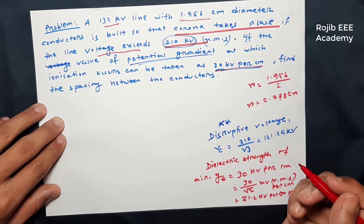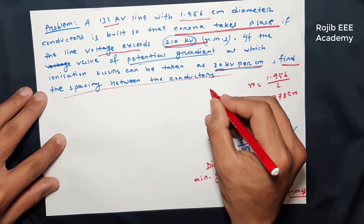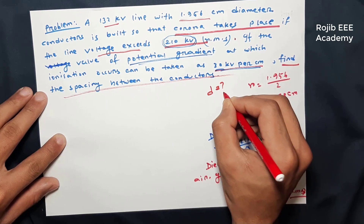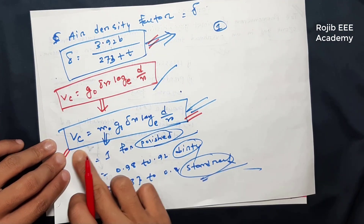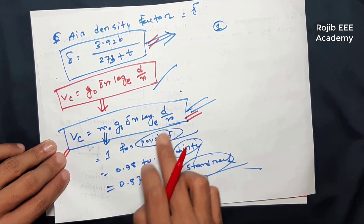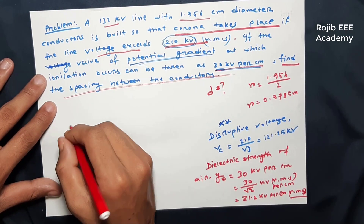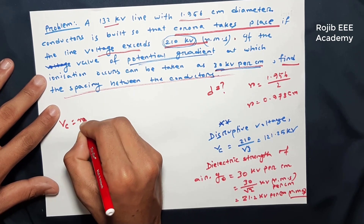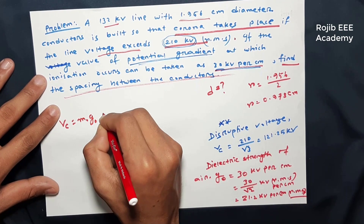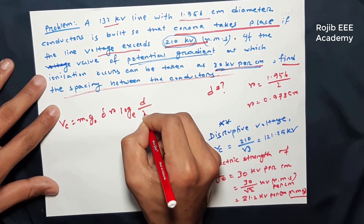Now we need to calculate the spacing between the conductors — that means d is equal to what? We have the disruptive voltage here. Vc is equal to m0 · g0 · δ · r · log_e(d/r). We have seen this formula and will now apply it.